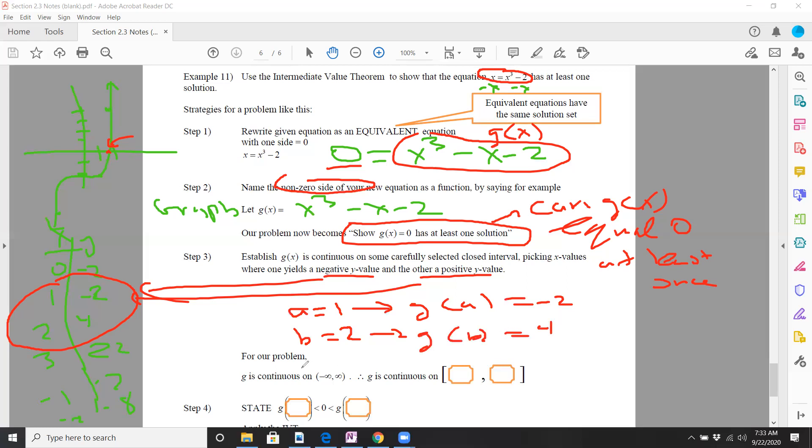Now, is this continuous on all real numbers? Well, of course, it's a polynomial function. Since this is continuous for all real numbers, right? Of course, it's continuous from one to two. We know that. So therefore, g of one, and we know g of one is less than zero, and we know g of two is greater than zero.